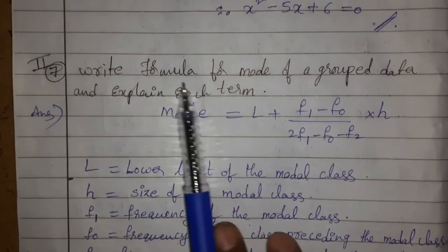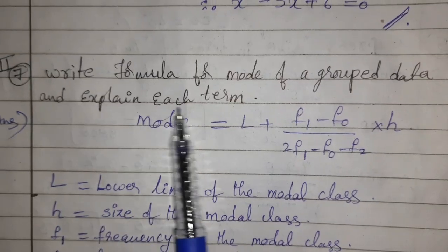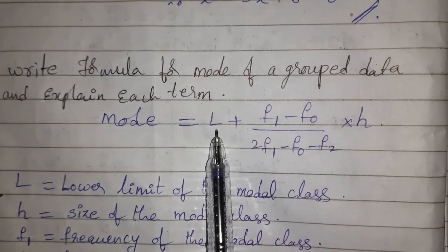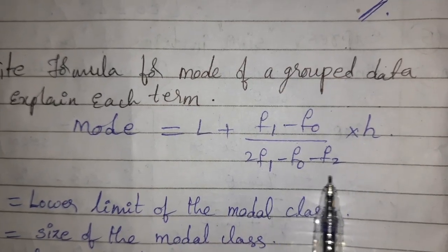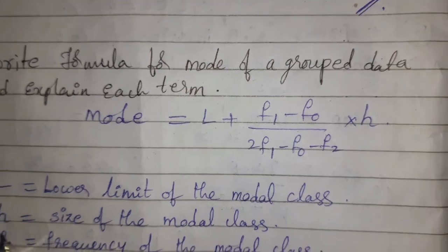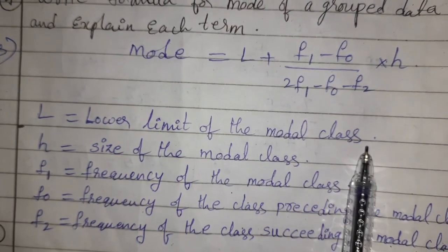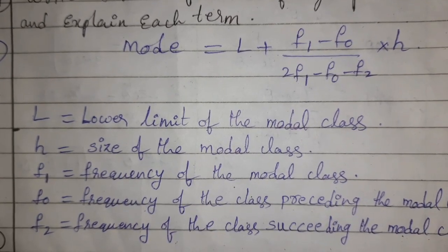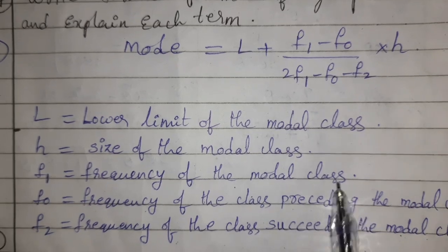Seventh question: write the formula for mode of grouped data and explain each term. Mode = l + [(f₁ − f₀) / (2f₁ − f₀ − f₂)] × h, where l = lower limit of modal class, h = size of the modal class, f₁ = frequency of the modal class.